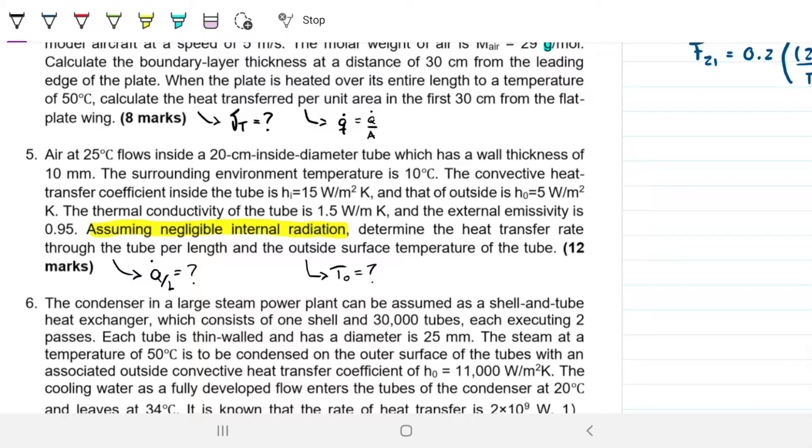Now, one thing interesting here is what makes this question hard is that we are given the external emissivity of the tube as 0.95, 95%, and we're told to ignore the internal radiation. So it's a problem that asks us to include radiation in the heat transfer that's occurring through convection and conduction. Because there's a fluid inside, fluid outside, and the tube that is a solid.